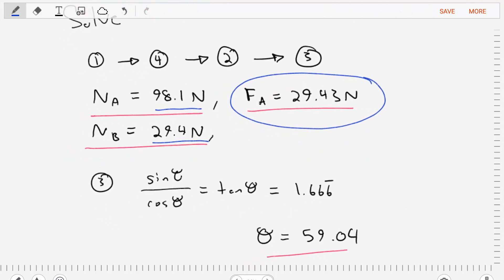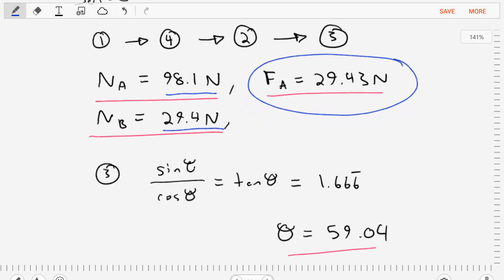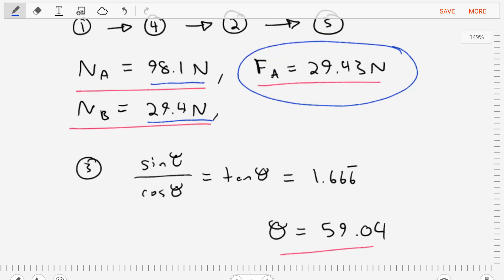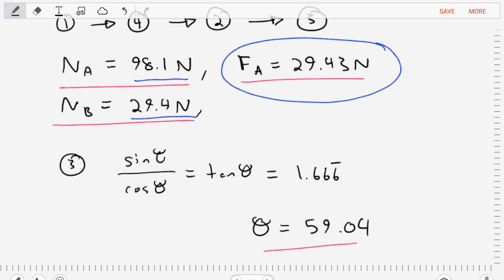And then if we take the results of that and rearrange and solve equation three, we'll find our final unknown. It's the angle of the ladder, which is equal to 59.04 degrees.